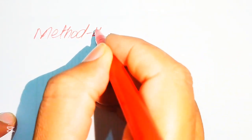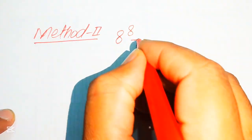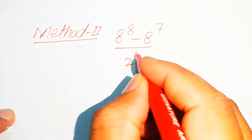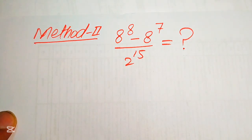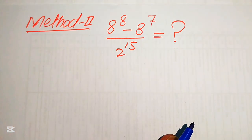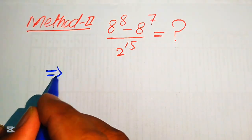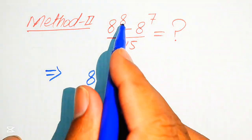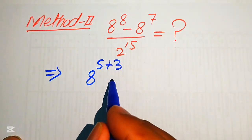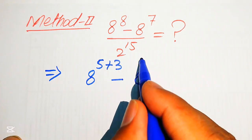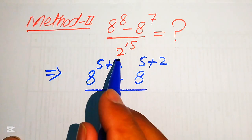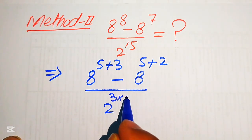Now we solve this problem using the second method. We copy down the given expression: 8 to the power of 8 minus 8 to the power of 7, divided by 2 to the power of 15, written into lowest form. We focus on the exponents of all values. The exponent 8 is written as 5 plus 3; the exponent 7 is written as 5 plus 2; and the exponent 15 is written as 3 multiplied by 5.